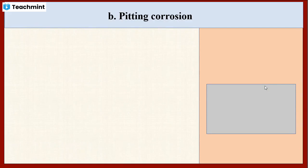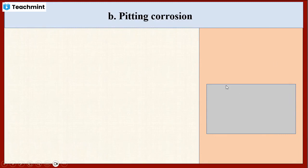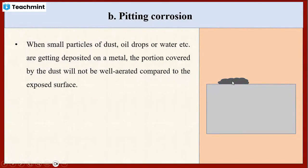Another type of differential aeration corrosion is pitting corrosion. This is a localized form of corrosion and it takes place very rapidly. In this type, some pits — meaning holes or cavities — are generated on the metal surface. Consider an iron metal surface: when small particles of dust, or drops of oil or water, are deposited on this metal surface, pitting corrosion takes place, as you can see here.